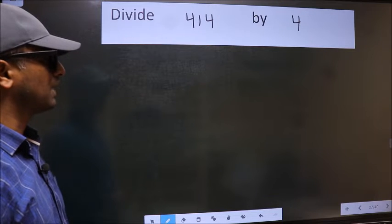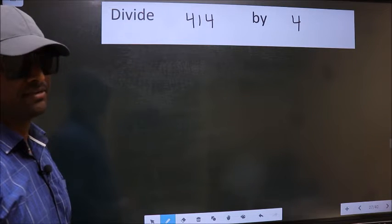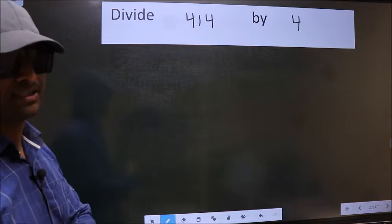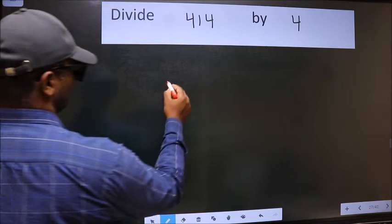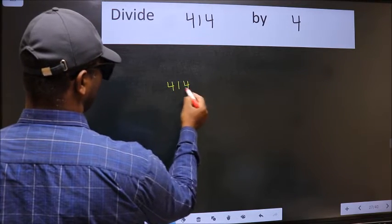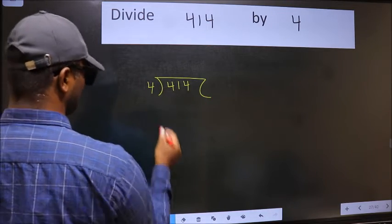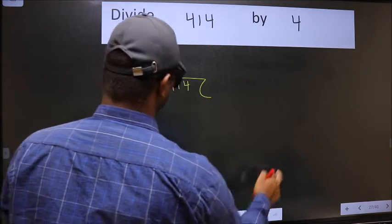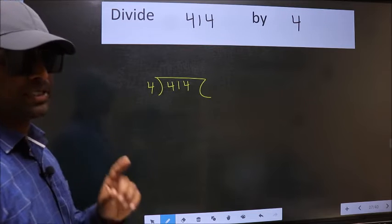Divide 414 by 4. To do this division, we should frame it in this way: 414 and 4 here. This is your step 1.